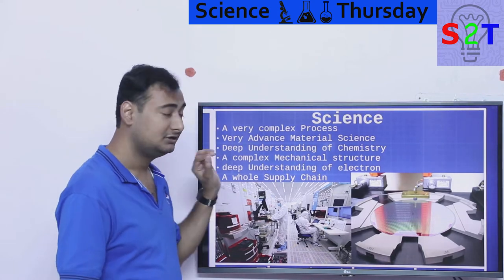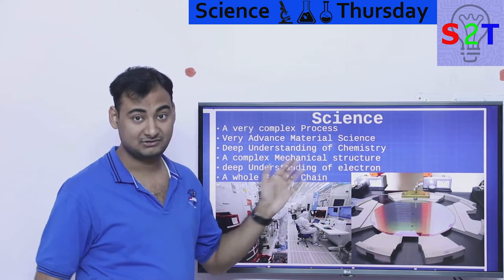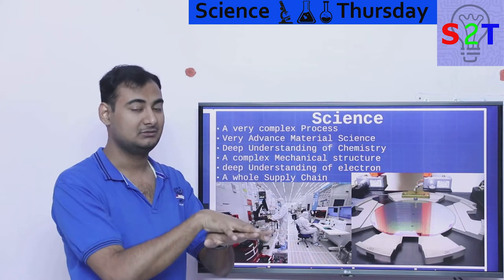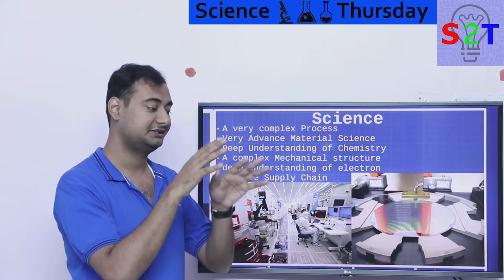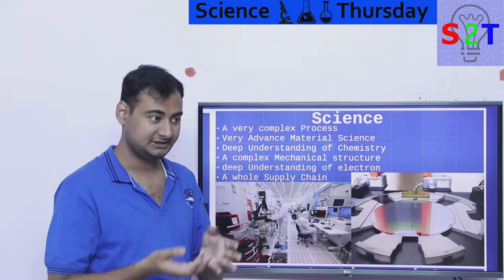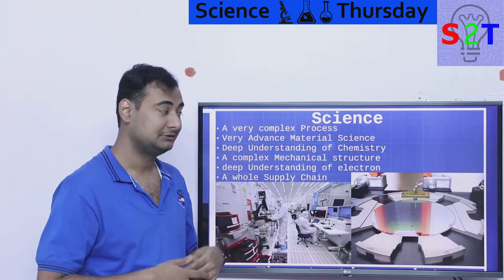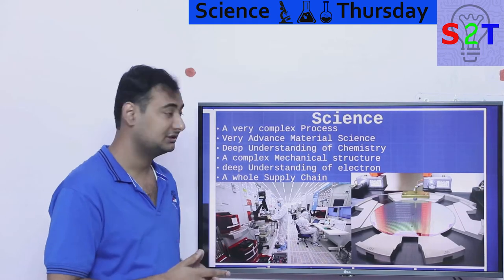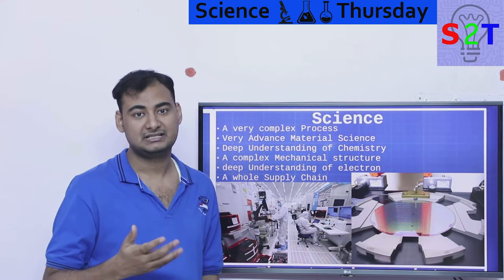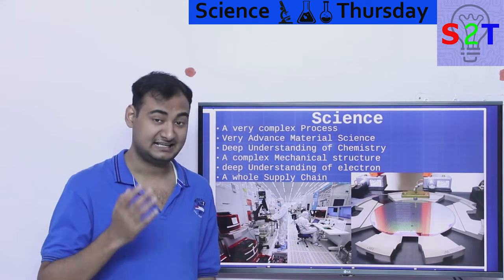Then you also need deeper understanding of chemistry because we are physically etching things away. We're going to put a mask, that mask will become hard wherever it's exposed to UV light. What happens to the part that is not exposed to it? What do they become? Is it easier to remove them or harder to remove them? Depending on all those things we have to do the chemistry.